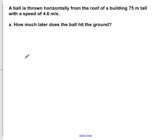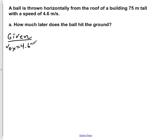A ball is thrown horizontally from the roof of a building 75 meters tall with a speed of 4.6 meters per second. How much later does the ball hit the ground? The first thing we're going to do is write down our given information. Since the ball is thrown horizontally with a speed of 4.6 meters per second, V0x is equal to 4.6 meters per second. And because it was only thrown horizontally, there is no vertical component, so V0y is equal to 0 meters per second.